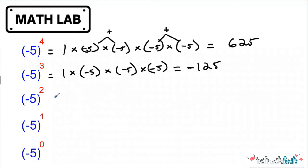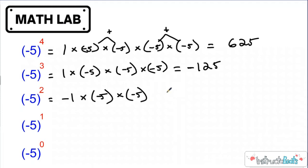Let's check out negative five to the second power. I have my positive one, and I'm multiplying by two copies of negative five, because that's what my exponent told us. Obviously five times five is 25. I have negative times negative, which is going to be positive, so this is going to be a positive 25.